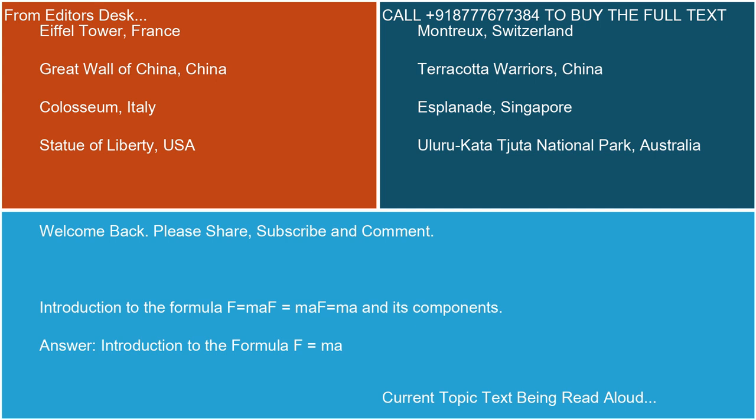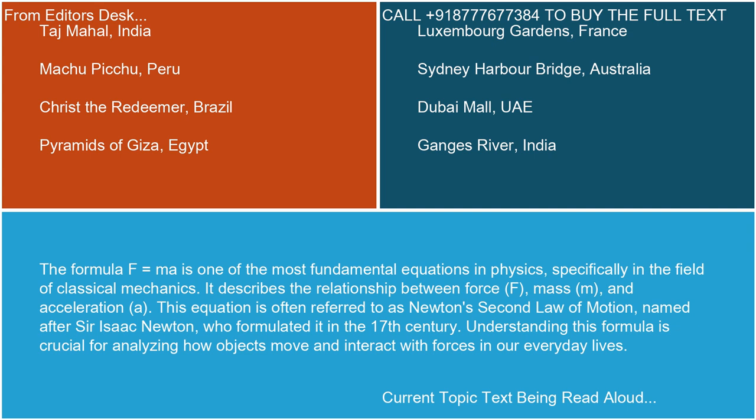Introduction to the formula F equals ma. The formula F equals ma is one of the most fundamental equations in physics, specifically in the field of classical mechanics. It describes the relationship between force (F), mass (m), and acceleration (a). This equation is often referred to as Newton's second law of motion, named after Sir Isaac Newton, who formulated it in the 17th century. Understanding this formula is crucial for analyzing how objects move and interact with forces in our everyday lives.